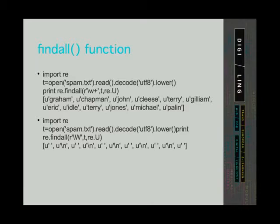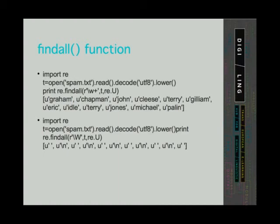The next example also searches through the same file. This time we are searching for any alphanumeric character that occurs one or more times. The special sequence for alphanumeric characters is backslash lowercase w. This expression is used for finding all occurrences of tokens in a string or a text — if we define a token as any uninterrupted sequence of alphanumeric characters. In the last example, we are looking for all non-alphanumeric characters, which is expressed by backslash uppercase W. There are various special sequences like backslash w that you can find by following the link provided in this presentation.